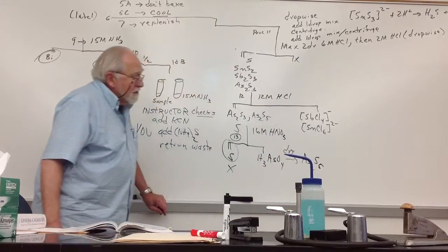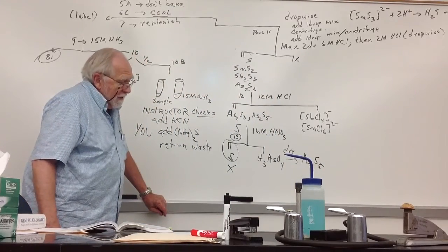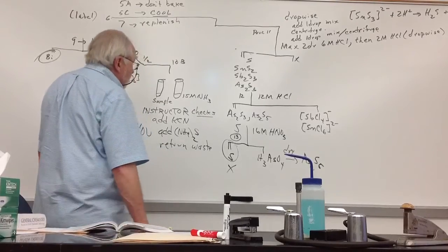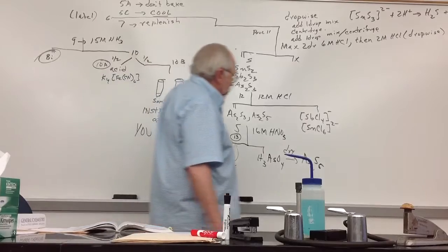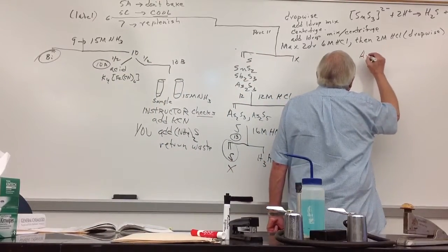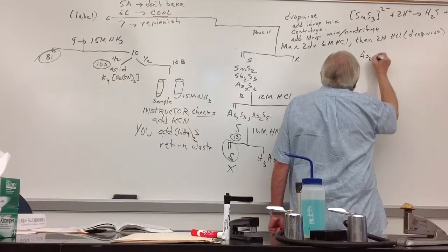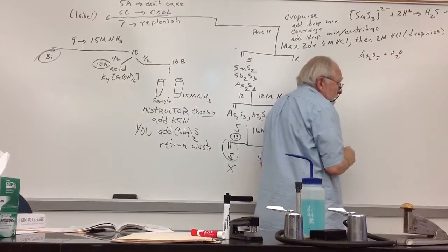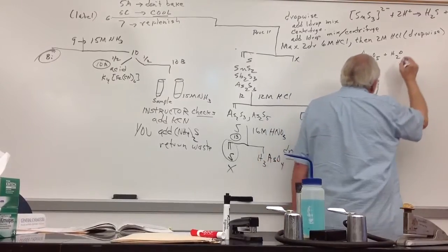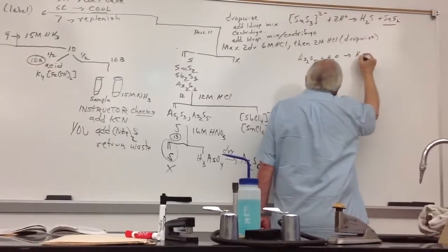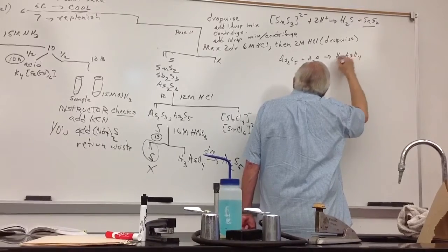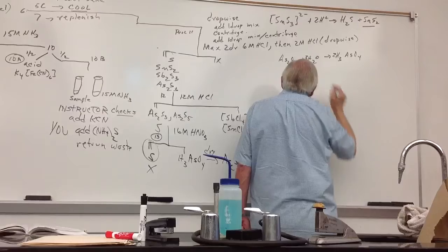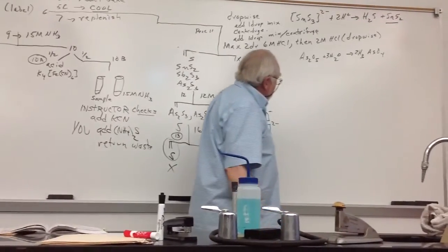You're going to add silver nitrate. And what should happen, and I'm looking for a place to write this - first of all, the water from the silver nitrate is going to convert this to arsenic acid again. To what? H3AsO4. So, there's what happens when you add the water.